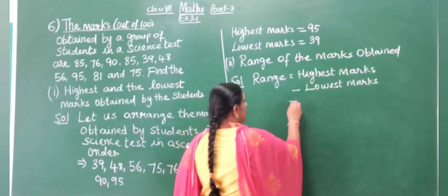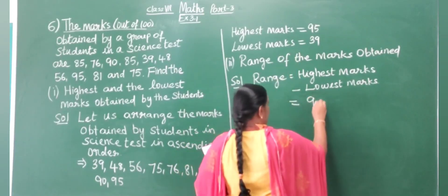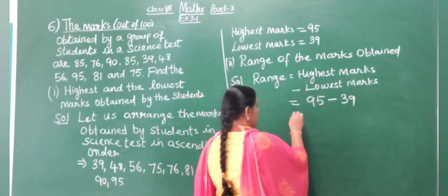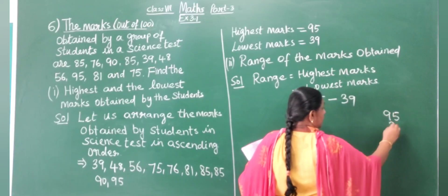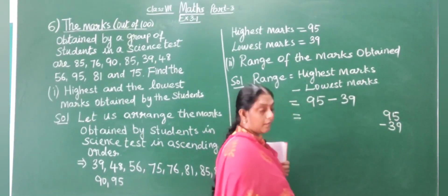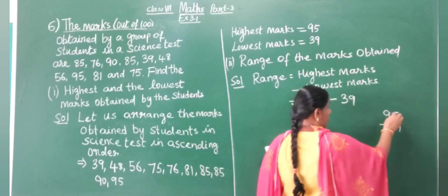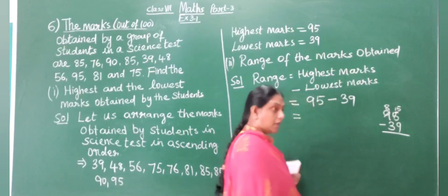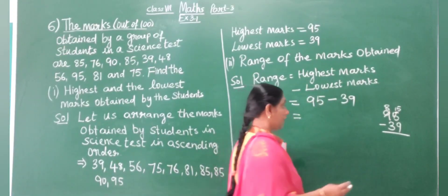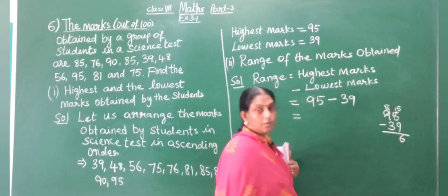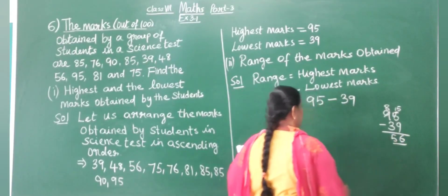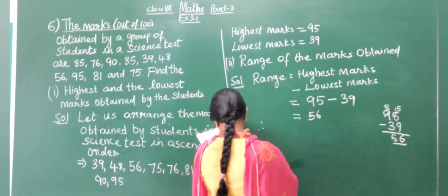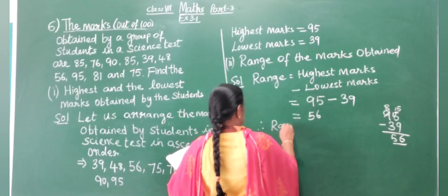Here, the highest marks is 95 and the lowest marks is 39. So, range equals 95 minus 39. From 5 we cannot subtract 9, so we borrow. It becomes 15 minus 9 equals 6, and 8 minus 3 equals 5. Therefore, range equals 56 marks.